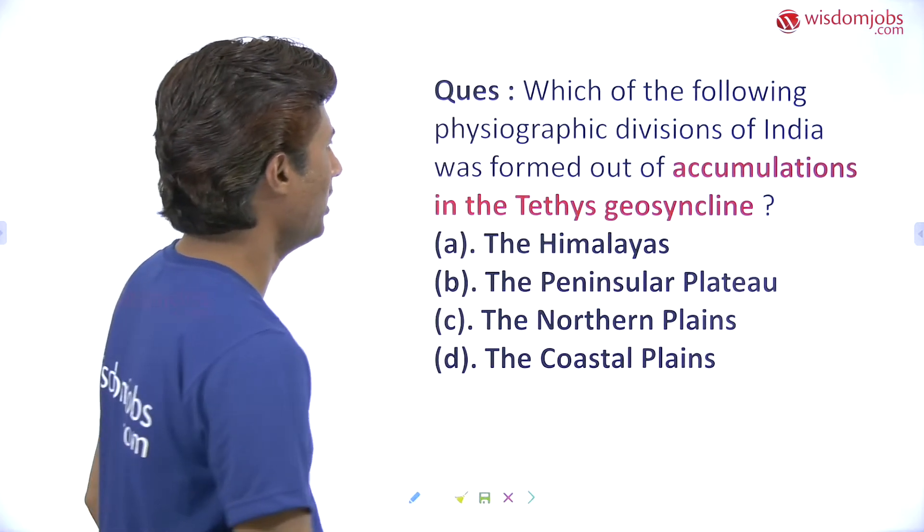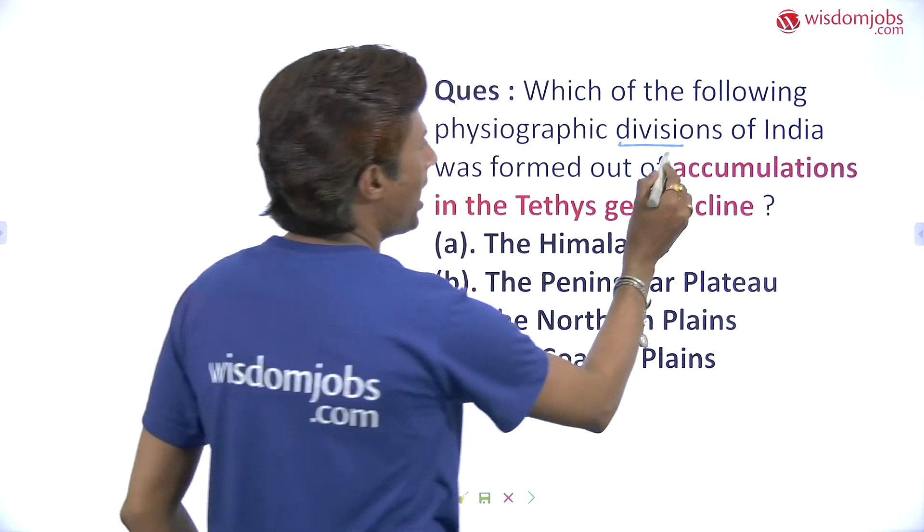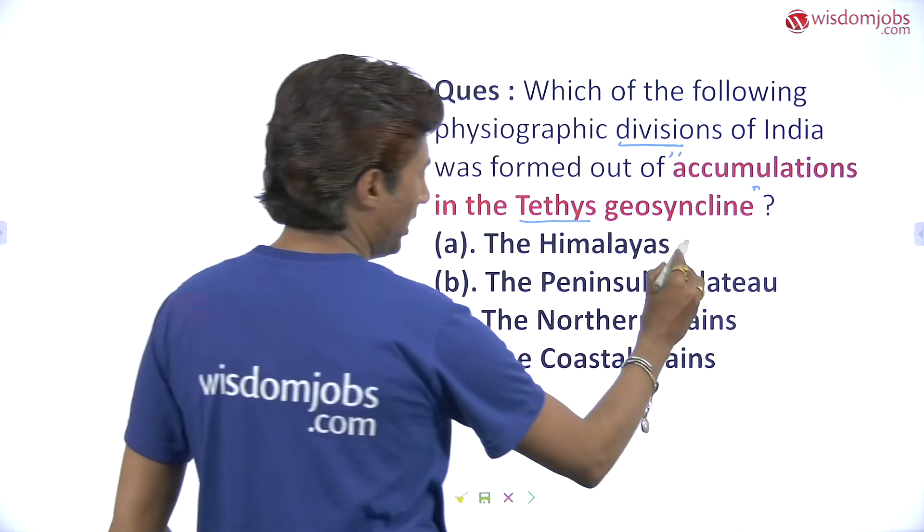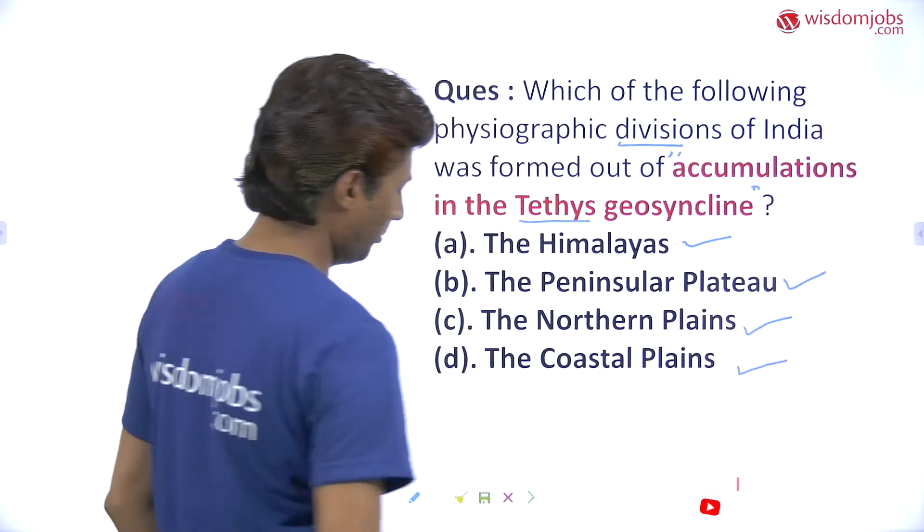Hello friends, welcome to Wisdom Jobs. This is Rupesh Jadav again with another topic regarding Indian geography. Before going forward, I'd like to tell you to go through my other videos on climate, seasons, geological time scale, geological structure of India, coastal area, islands, northern Indian plain, peninsular plateau, and Himalayas. So without wasting time, the next question: which of the following physiographic divisions of India was formed out of accumulation of the Tethys geosyncline? Was it the Himalaya, peninsular plateau, northern Indian plain, or coastal plain?